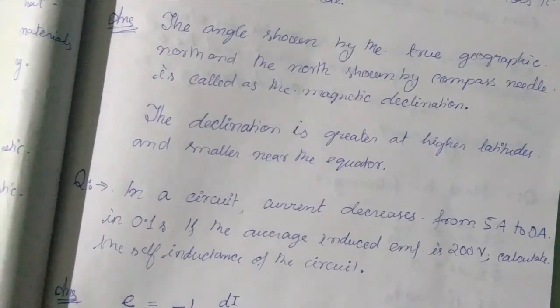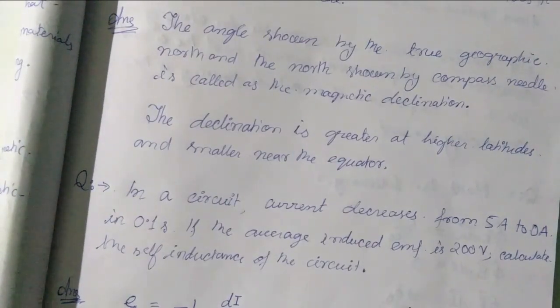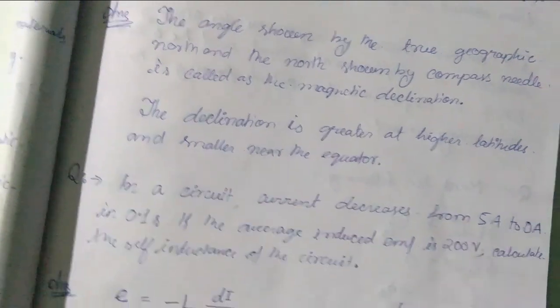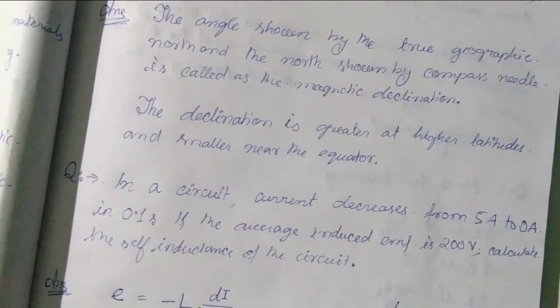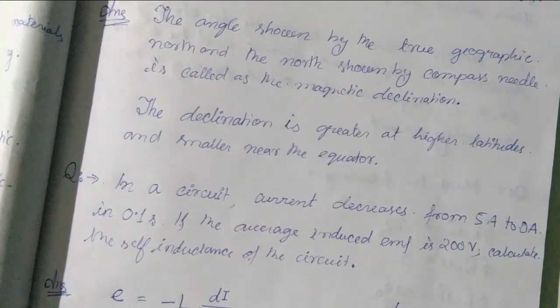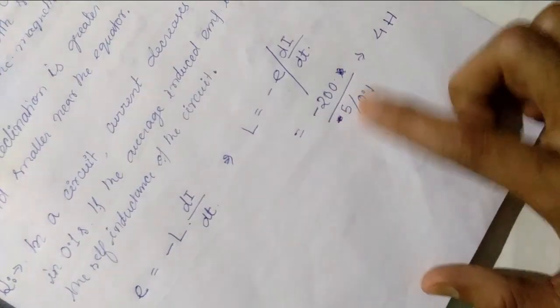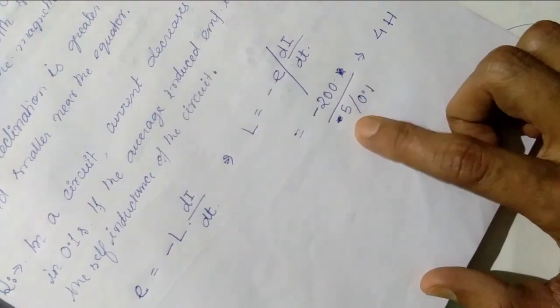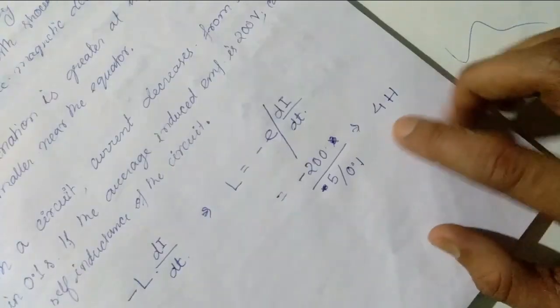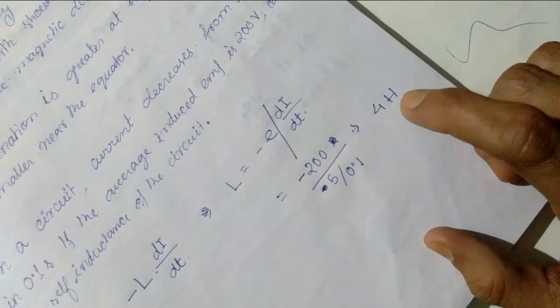The self inductance E is equal to minus L di by dt or L is equal to minus E divided by di by dt or we can write this to be equal to minus 200 divided by 5 divided by 0.1, or we can calculate this to be 4 henry.